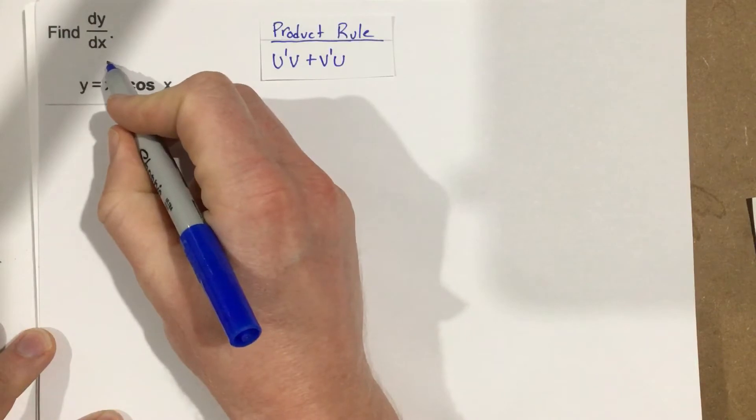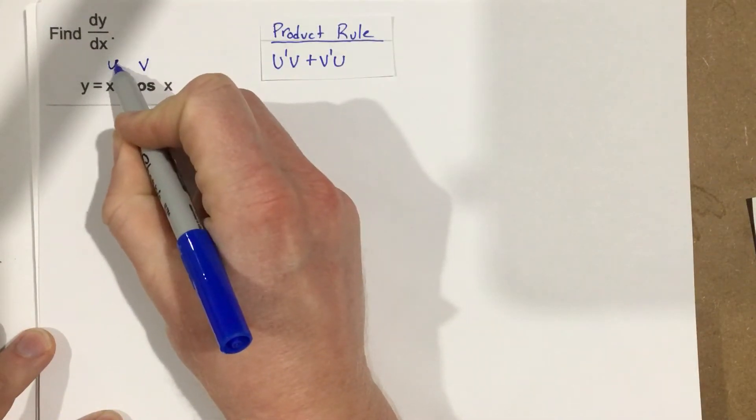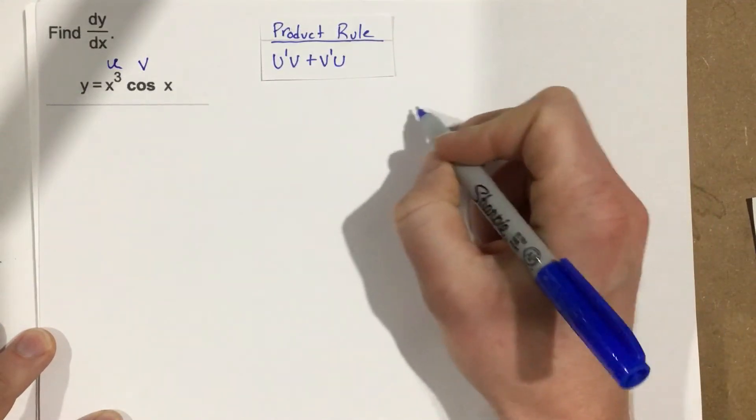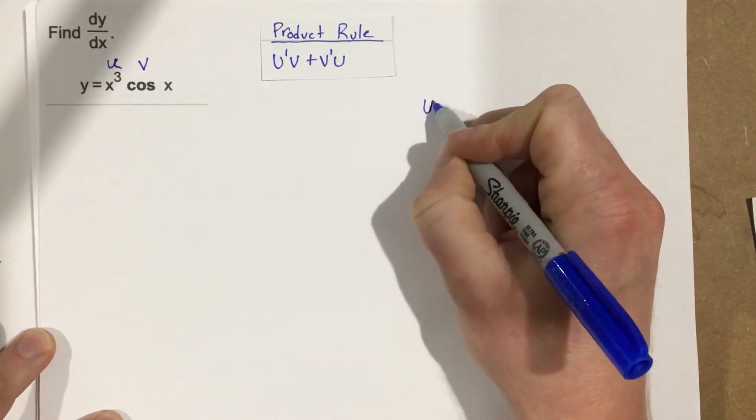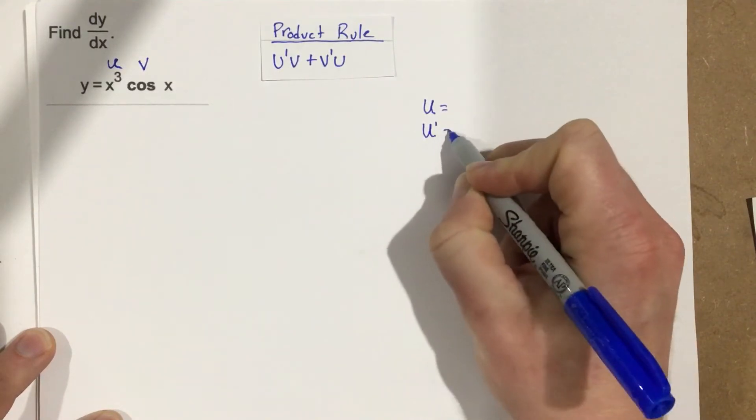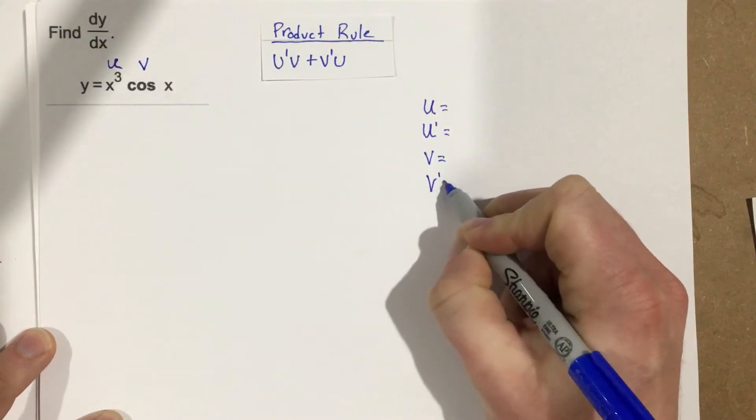So we're going to label each of these functions. I'm going to call this u and this v. So I'm going to go out to the side here. I'm going to say u equals, u prime equals, v equals, and v prime equals.